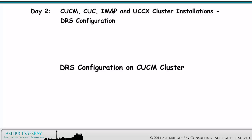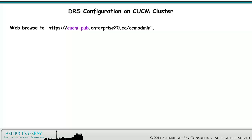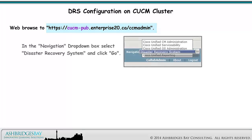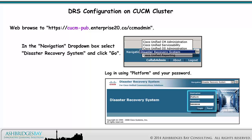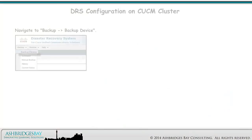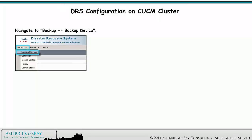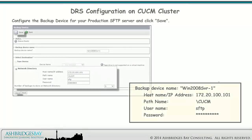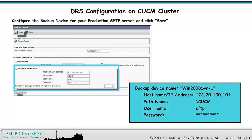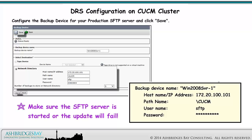First up is DRS configuration on the CUCM cluster. Web browse to this address. In the navigation drop-down box, select Disaster Recovery System and click Go. Log in using platform and your password. Navigate to Backup > Backup Device. The newly installed CUCM cluster has nothing configured. Click Add New. Configure the backup device for your production SFTP server and click Save. Make sure the SFTP server is started or the update will fail.